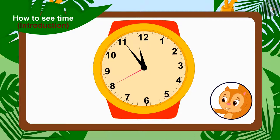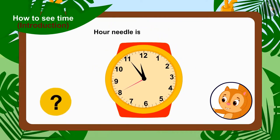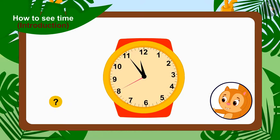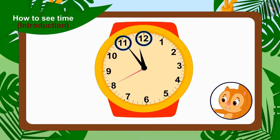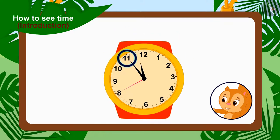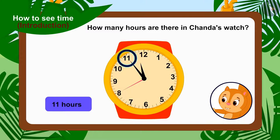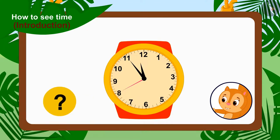This is the time on Chanda's watch. Children, can you tell what number the hour needle is on? Yes, between 11 and 12. Whenever the hour needle is between any two numbers, then we have to take the smaller number of the two numbers as our number. So how many hours are there on Chanda's watch? Yes, 11 hours.